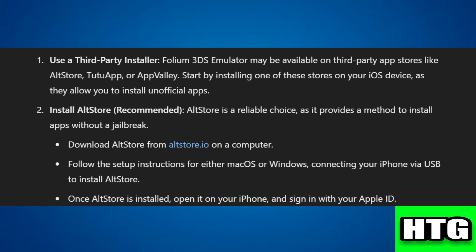Step two: install Altstore (recommended). Download Altstore from AltStudio on a computer and follow the setup instructions for Mac or Windows, connecting your iPhone via USB to install Altstore. Once installed, open Altstore on your iPhone and sign in with your Apple ID.